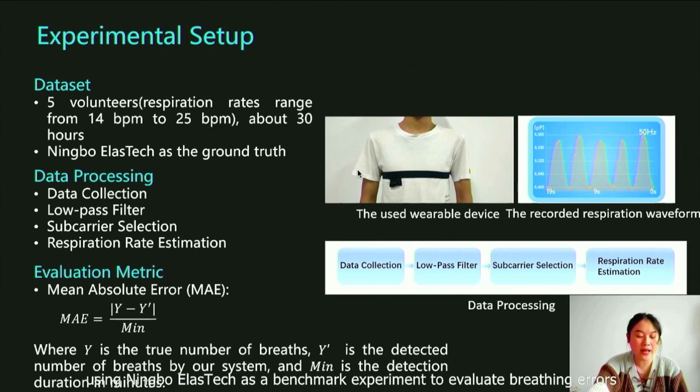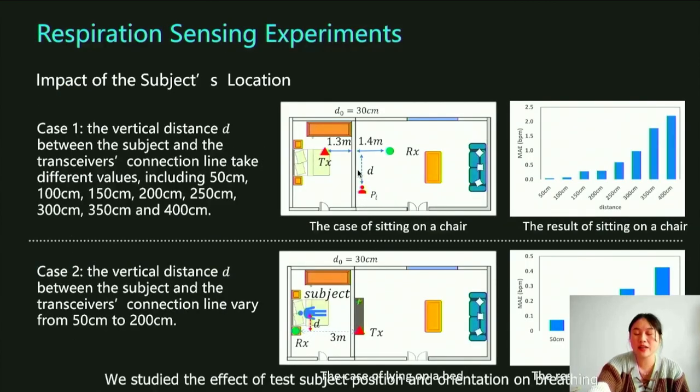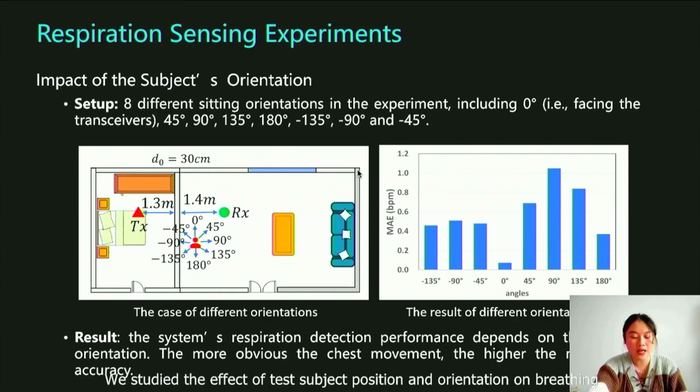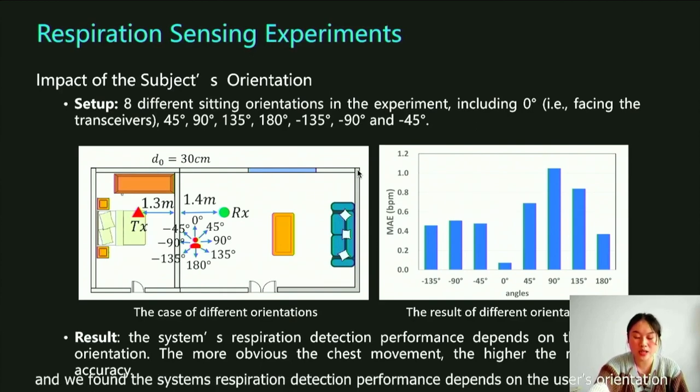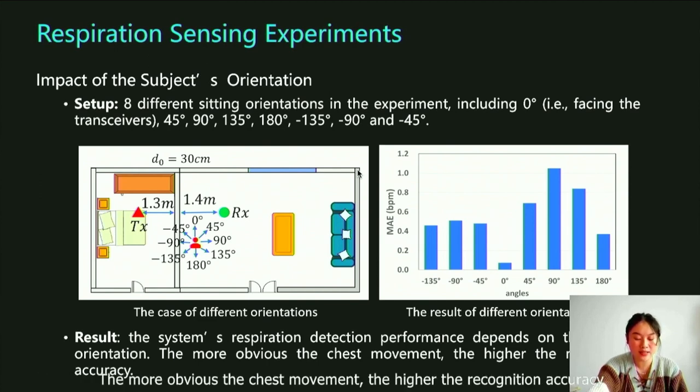We also evaluated our model through breathing experiments, using a respiration belt as a benchmark to evaluate breathing rates. We studied the effects of test subject position and orientation on breathing, and we found the system's respiration detection performance depends on the user's orientation. The more obvious the chest movement, the higher the recognition accuracy.